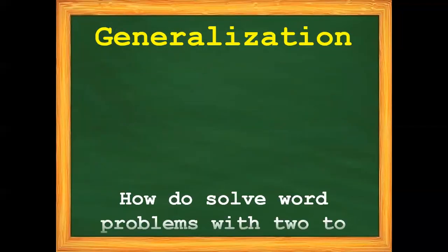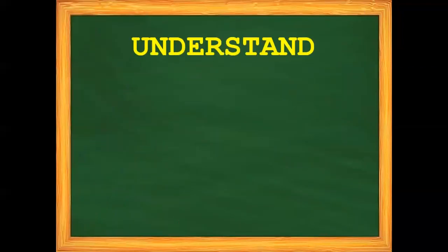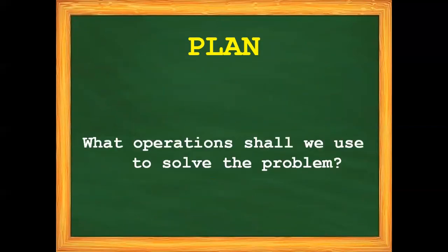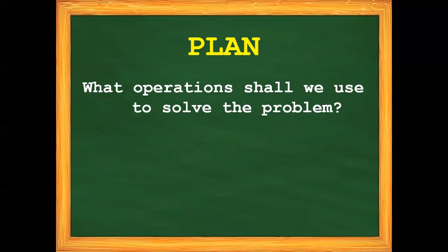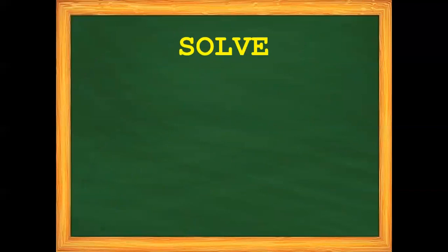Always remember: how do we solve word problems with 2 to 3 steps involving multiplication of decimals? First, we have to understand the problem — what is asked and what are the given facts. Next, we have to plan — what operations shall we use to solve the problem? And finally, we are going to solve it. Show your solution.